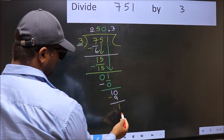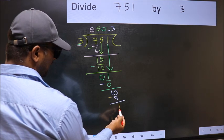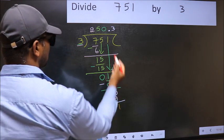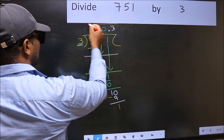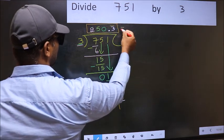10 minus 9, 1. We got 1 again. That means, we get bar on this number. So this is our quotient.